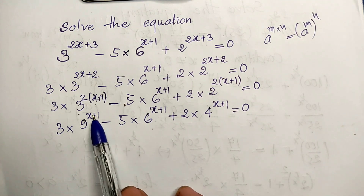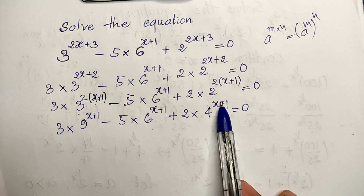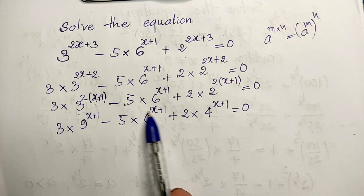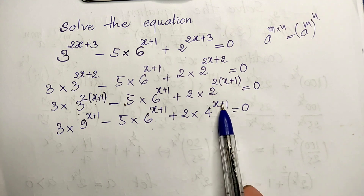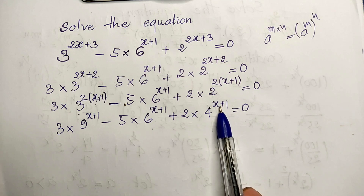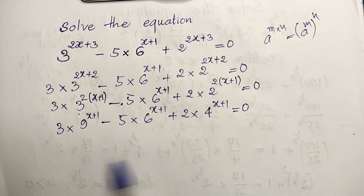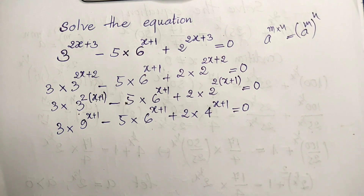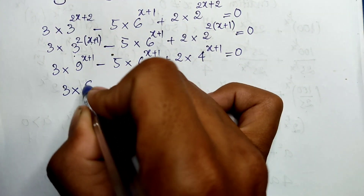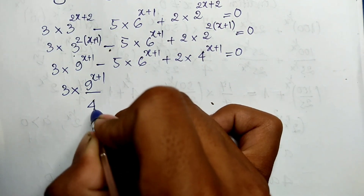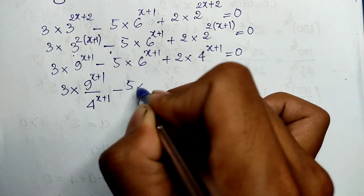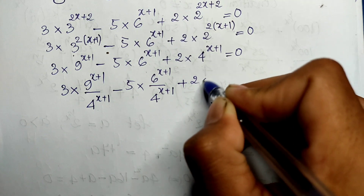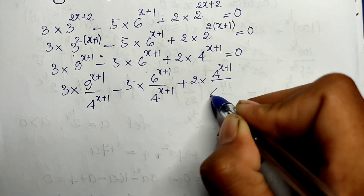Now we have x plus 1 as the exponent in all three terms: 9 to the power of x plus 1, 6 to the power of x plus 1, and 4 to the power of x plus 1. So we can divide both sides of this equation by 4 to the power of x plus 1. This gives us: 3 times 9 to the power of x plus 1 divided by 4 to the power of x plus 1, minus 5 times 6 to the power of x plus 1 divided by 4 to the power of x plus 1, plus 2, equals 0.